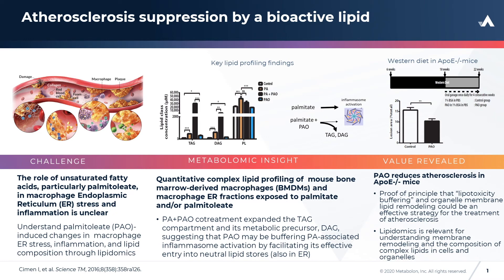Mice were placed on a Western diet for 16 weeks, with oral administration of palmitoleate starting at 12 weeks. Chronic oral palmitoleate treatment resulted in a significant decrease in the development of atherosclerotic lesions in aortic analysis of treated mice compared to control mice.